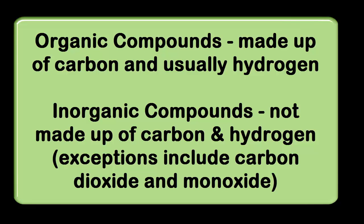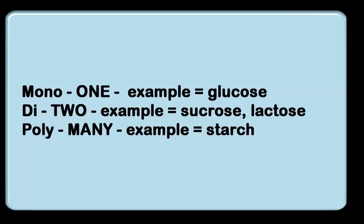Next question: what is the difference between monosaccharides, disaccharides, and polysaccharides? You probably know mono means one, di means two, poly means many. These are sugars, and monosaccharides are the simplest sugars there are. An example of this is glucose — it's a five-carbon sugar and is extremely easily broken down.